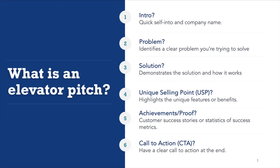Number four, your unique selling point — what is it about the features or benefits that makes your solution great and unique? Number five, achievements, social proof, or even market potential — you can talk about customer stories, how many people you've worked with, or what results you're getting. Number six, a clear call to action. And finally, some kind of engagement question at the end to take your discussion to the next stage.